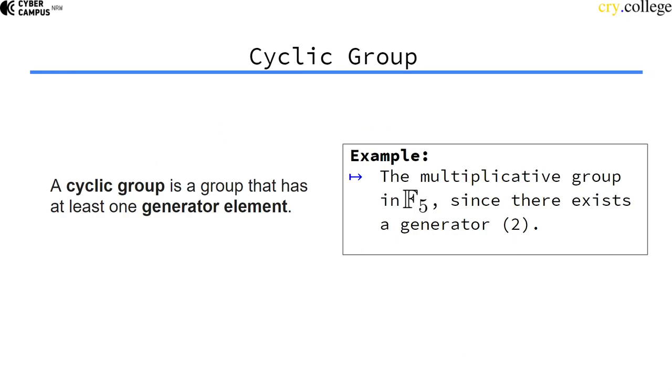A cyclic group is a group that has at least one generator. If the group can be generated from one element, then it's a cyclic group. The multiplicative group in F5, for example, is a cyclic group.